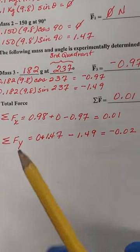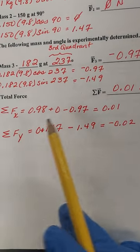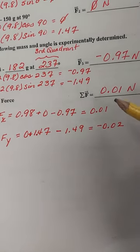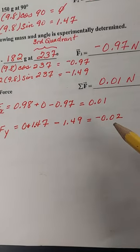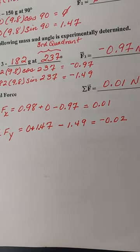And you add these force vectors in the y direction and end up with negative 0.02 newtons. This is what that looks like. The sum of the forces in the x direction, 0.01 newtons. The sum of the forces in the y direction, negative 0.02 newtons. And that's basically how you complete this.